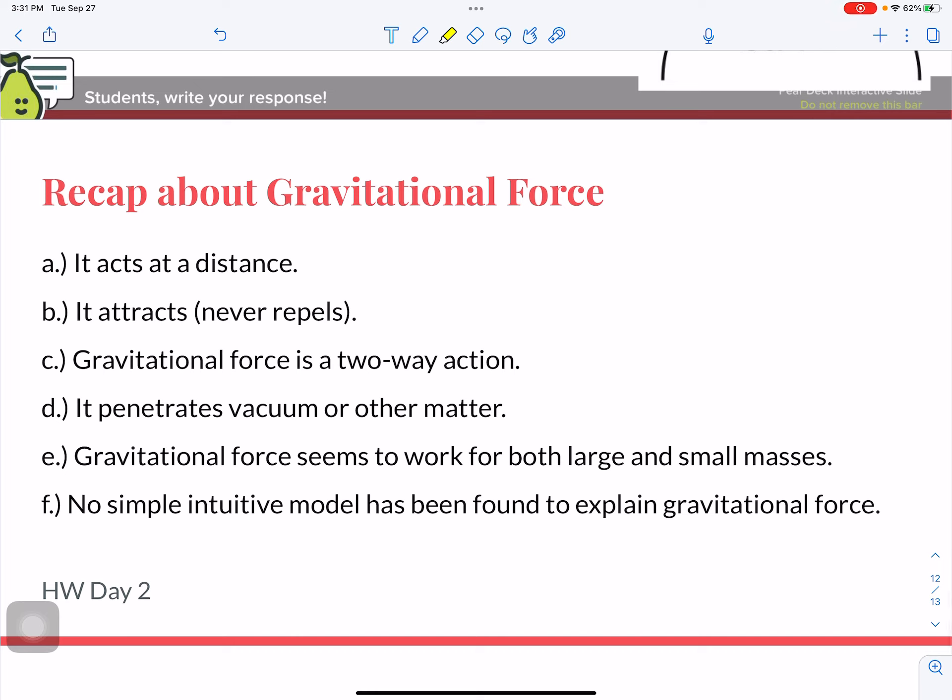So I'll recap. Gravitational force, it acts at a distance. It is always an attractive force. It's a two-way action. In other words, it's an interaction between two objects. It penetrates a vacuum or other matter. The vacuum of space, we still attract the moon. The earth still attracts the moon even though there's a vacuum between the moon and earth once you get beyond the atmosphere. Gravitational force seems to work for both large and small masses. There's no simple intuitive model that has been found to explain the gravitational force. We just know that it exists and we kind of use it to predict things. There is homework.